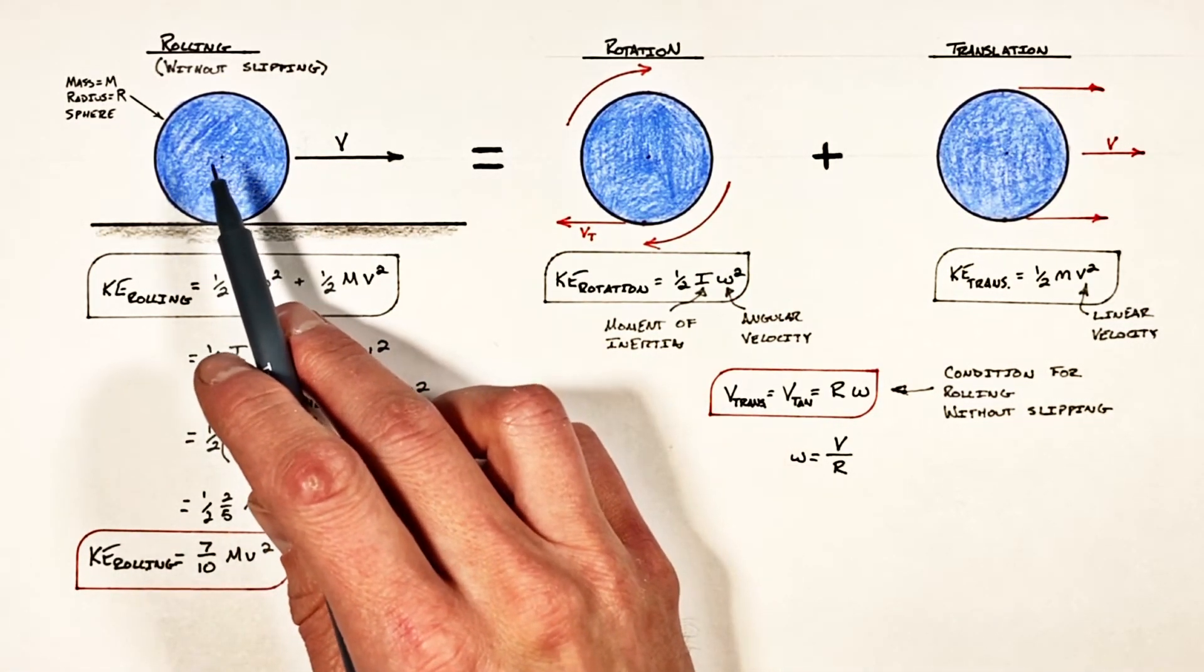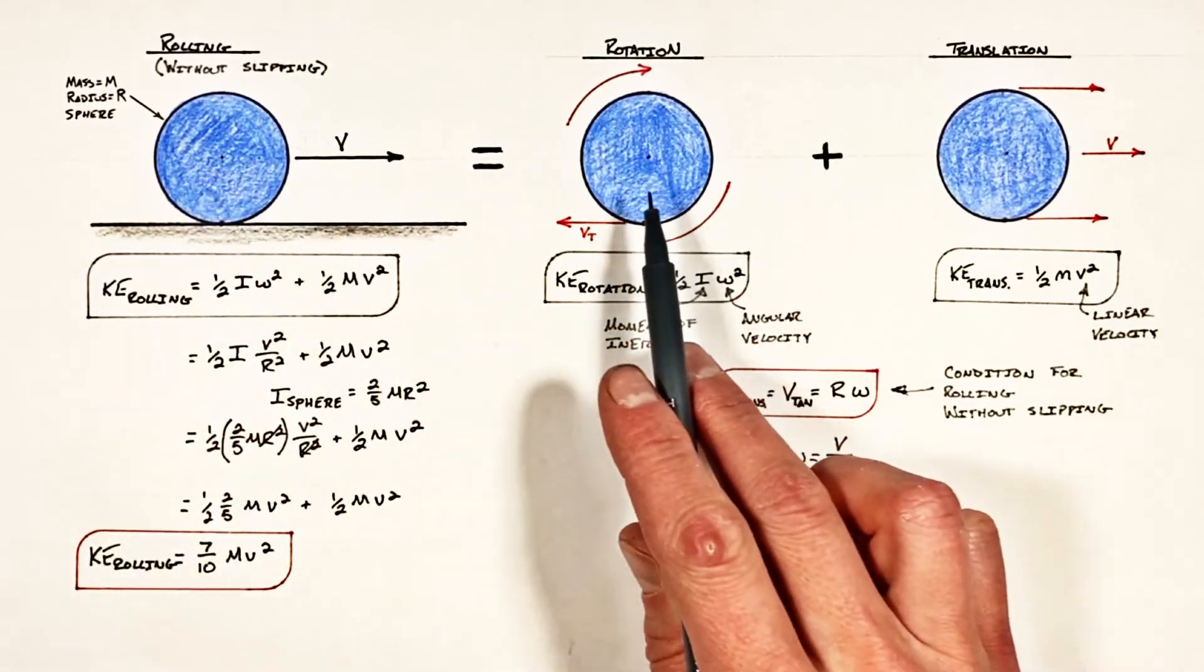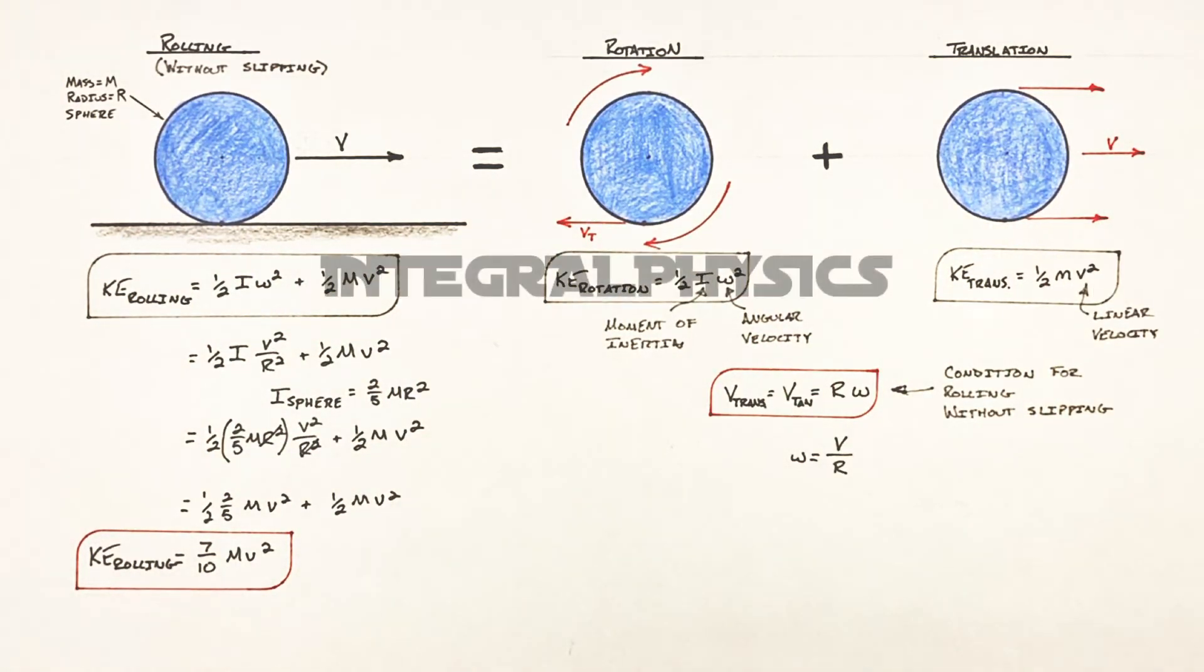So I hope you found this useful in understanding the relationship between rolling, rotation, and translation. And on that note, that's all for now.